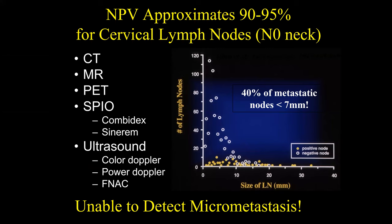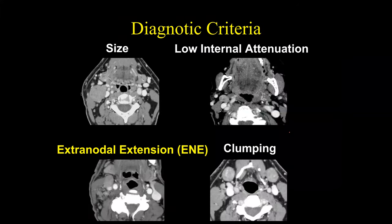Realize that 40% of lymph nodes are less than 7 millimeters, and as a result we cannot detect micrometastasis. Whether we do CT, MR, PET, or any other type of imaging including nanoparticles, we're not going to be able to detect micrometastasis. Therefore, referring physicians need to treat based on the primary drainages as opposed to what we see on imaging. Imaging can help guide treatment, but small metastases we simply will not be able to see.